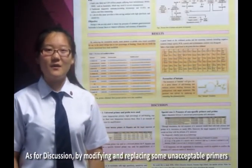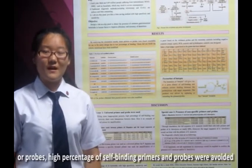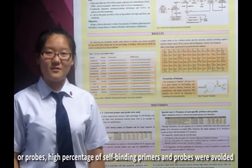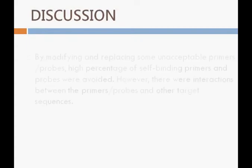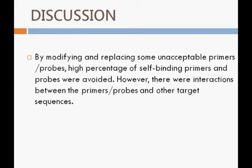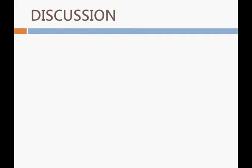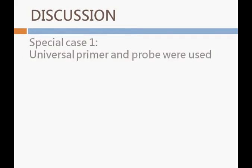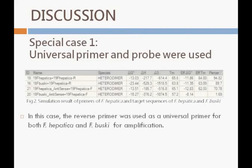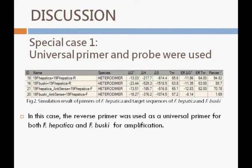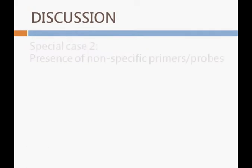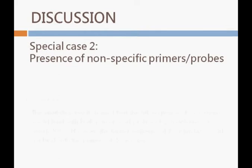As for discussion, by modifying and replacing some unacceptable primers or probes, high percentage of self-binding in primers and probes were avoided. However, there were interactions between the primers or probes with other target sequences. In the case of Fasciola hepatica and Fasciolopsis buski, these were used as universal primers and probes for amplification and generic detection, with another set of specific probes designed to differentiate between the two.